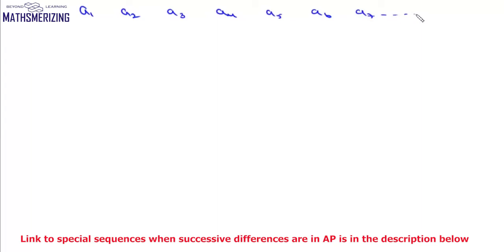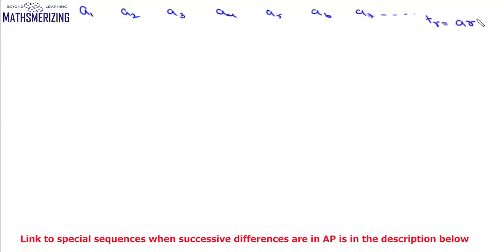If the difference in a sequence is in GP, and we have a sequence a1, a2, a3, a4, a5, a6, a7 in GP with common ratio r, we know that its general term is given by a into r to the power n minus 1.